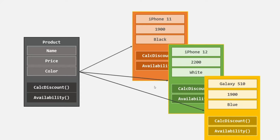Now, what is happening here is that for each instance, we will have a copy of that property and method. For example, each of these instances has a copy of the calc discount method and the availability method. Each instance also has a copy of the name, price, and color property.